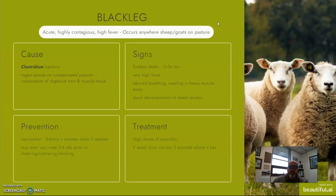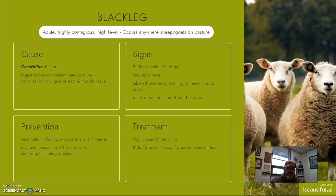Next, let's talk about blackleg. We've covered this one before. It can occur anywhere to both sheep and goats wherever you see animals on pasture, and it's very, very highly contagious. It is caused by Clostridium bacteria — spores that animals ingest, oftentimes off a pasture, which then colonize in the digestive tract and muscle tissue. Once they proliferate, they cause very high levels of infection and sepsis, and oftentimes very sudden death.